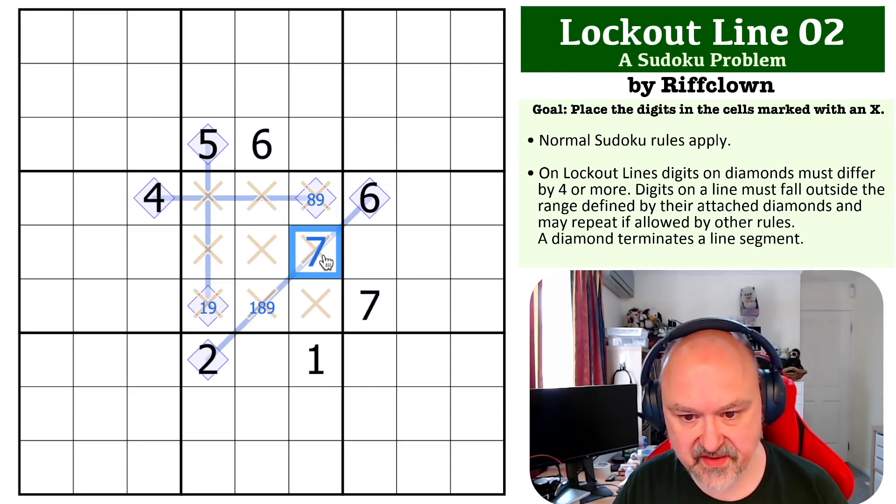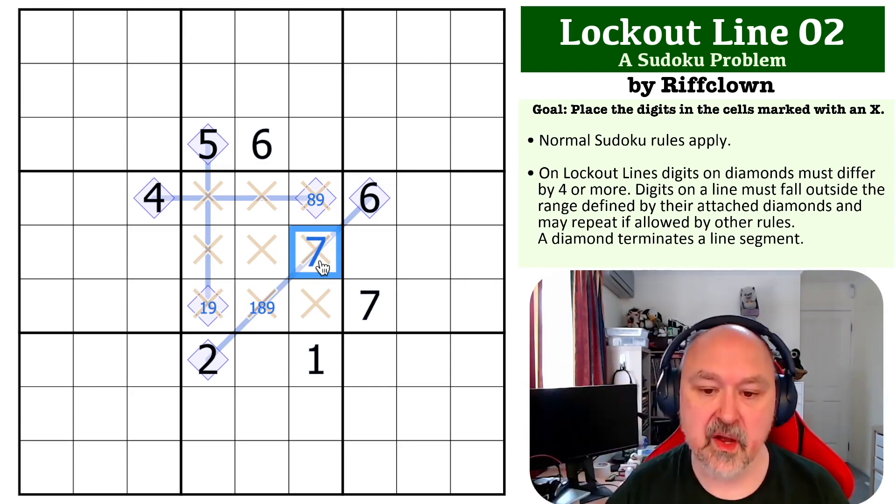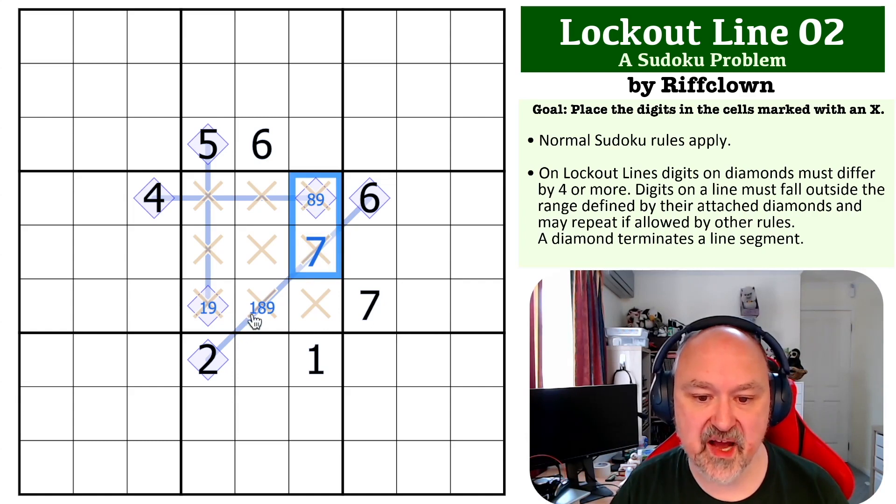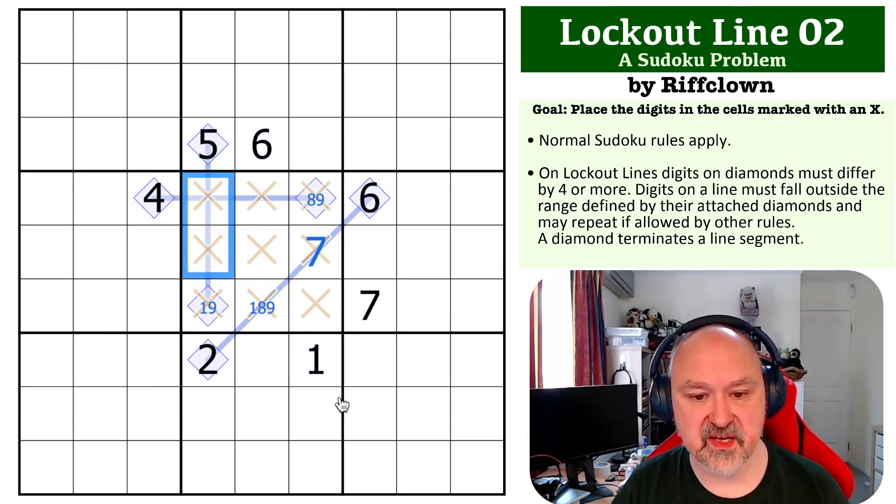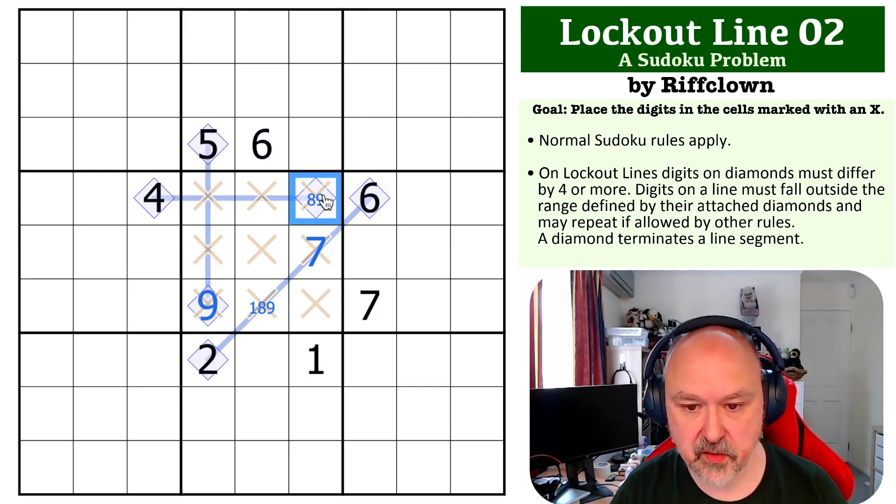Because seven, eight, and nine are gone, if this was to be a one, both of these would have to be from six, seven, eight, and nine. But seven, eight, and nine can't be used. So this has to be the nine, which makes this the eight, which makes this the one.